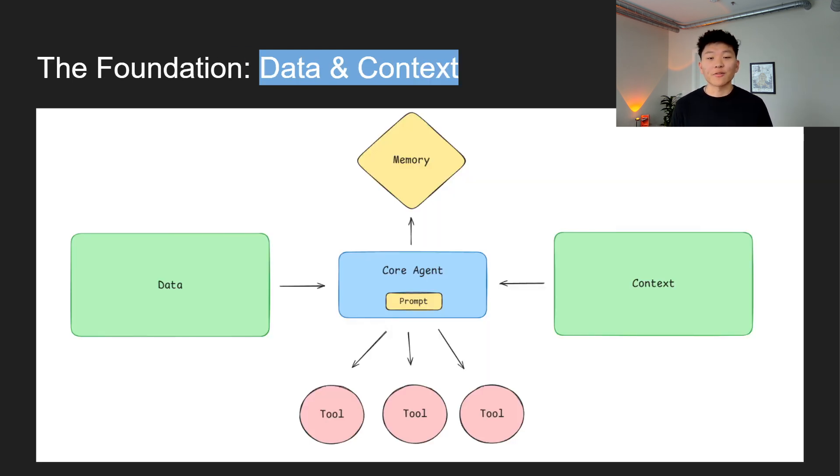So moving on to something that I've realized over the past months is so important: the foundation, which is data and context. We've all seen what they're capable of, but we need to talk about the fuel that powers these capabilities, which is data and context. Without high quality data, up-to-date data, even the most advanced AI agents, it's like having a car without gas. So data is key. We've all heard the phrase data is the new oil, and when it comes to AI agents, it couldn't be more true. An agent is only going to be as good as the data that it has access to.